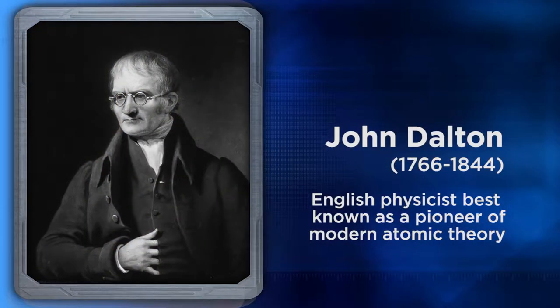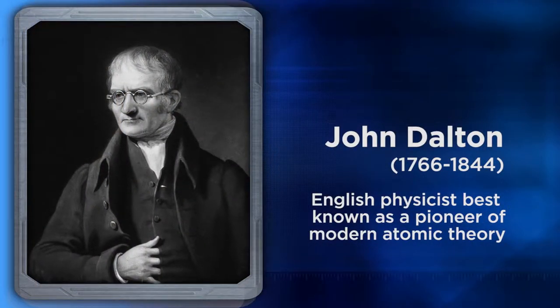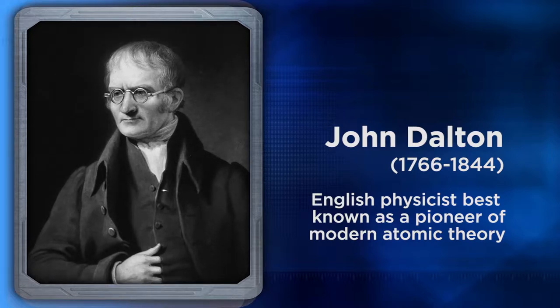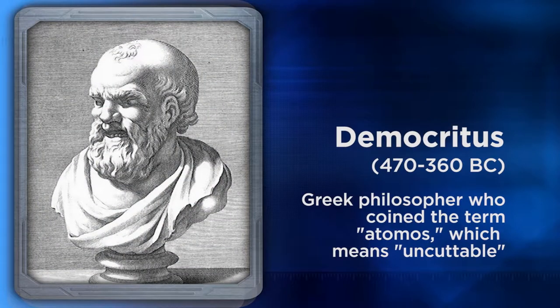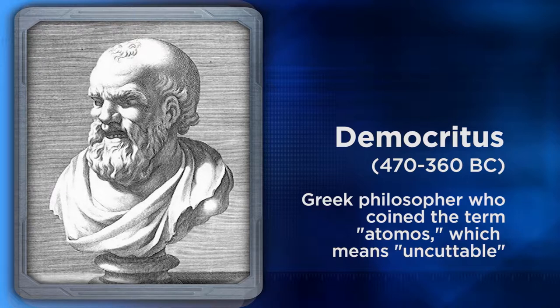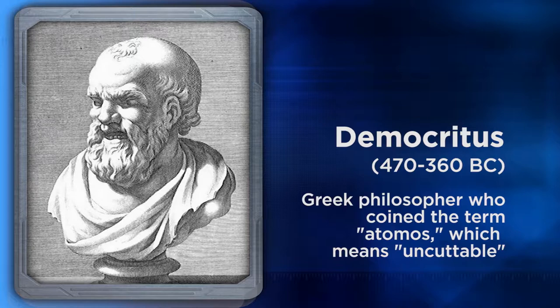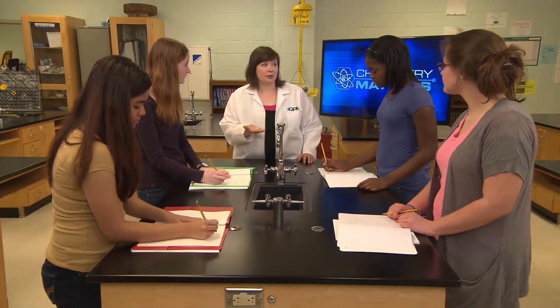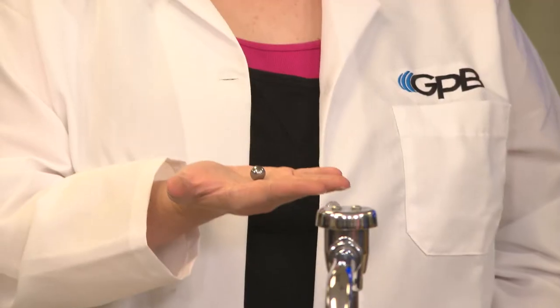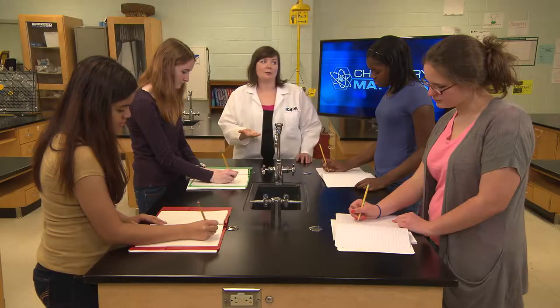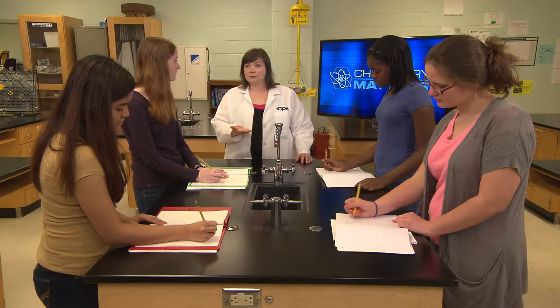This model of the atom was proposed by John Dalton, a scientist working in the early 19th century who based his model off the work of the Greek philosopher Democritus. Democritus coined the term atomos, which means uncuttable, and his model of the atom lasted for hundreds of years. Dalton believed that atoms were tiny spheres that could not be cut into anything smaller, that all atoms of a particular element were identical, and that these atoms could be combined in specific ratios to form new substances. Many of his ideas are found in our current model of the atom, but not all of them.